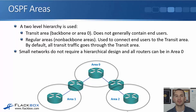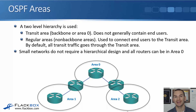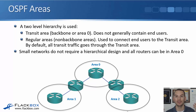With areas, we have a two-level hierarchy. At the top level, we've got the transit area, also known as the backbone or area zero. It does not generally contain end users when we've got a multi-area network. Then we've got our regular areas, also known as our non-backbone areas, which hang below area zero. They're used to connect end users to the transit area. By default, all transit traffic goes through the transit area.